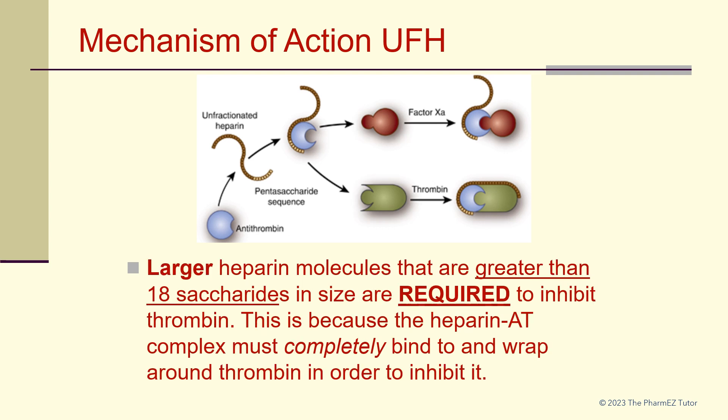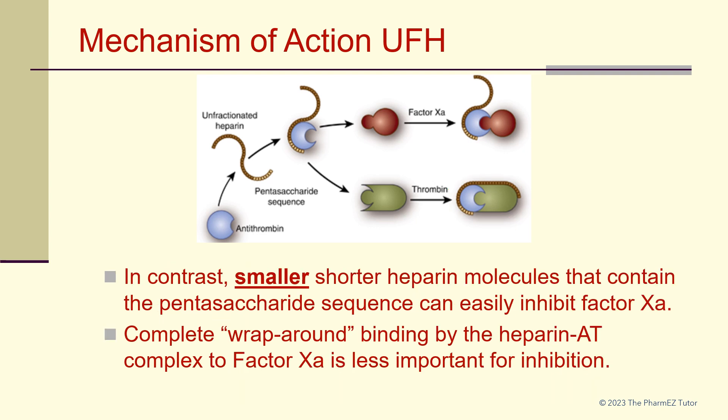Larger heparin molecules greater than 18 saccharides in size are required to inhibit thrombin, because the heparin-antithrombin complex must completely bind to and wrap around thrombin in order to inhibit it. In contrast, smaller, shorter heparin molecules that contain the pentasaccharide sequence can easily inhibit factor Xa — complete wraparound binding by the heparin-antithrombin complex to factor Xa is less important for inhibition.